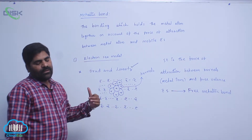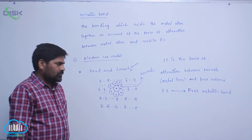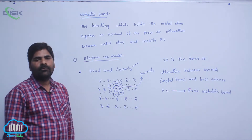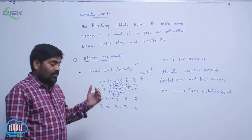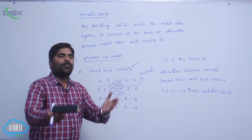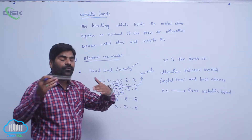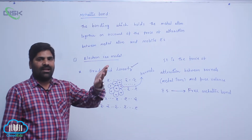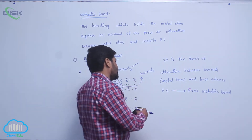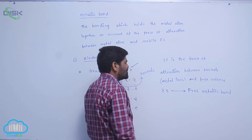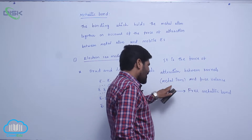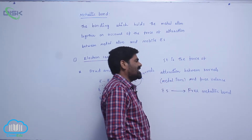Metals always lose electrons, so electrons carry a negative charge and the metal carries a positive charge. Therefore, there is a force of attraction between valence electrons and metal ions. These metal ions are treated as kernels — nothing but metal ions. So it is a force of attraction between kernels and the free valence electrons.